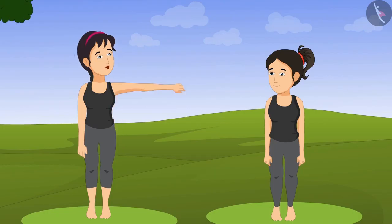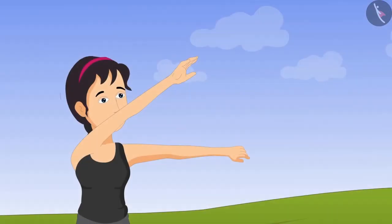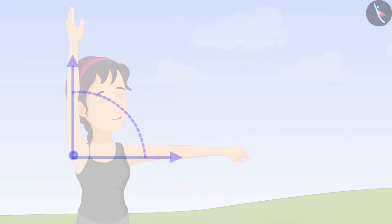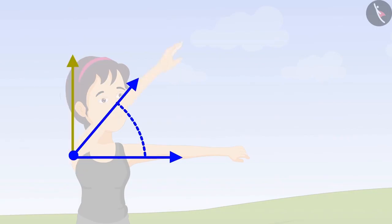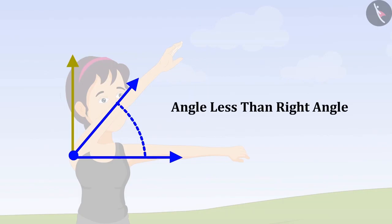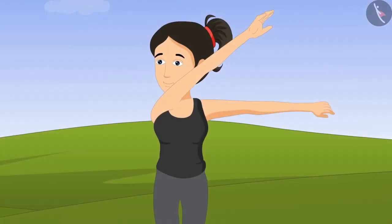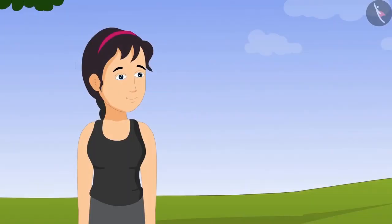Didi, are there any other types of angles? To find the answer to this, you have to make another angle with your hand. First, keep your left hand like this, and keep your right hand just below your nose like this. When we make a right angle, the distance between our hands is like this. To make this angle, we have decreased the distance between the hands. That means this has become an angle less than a right angle.